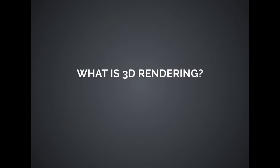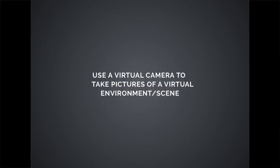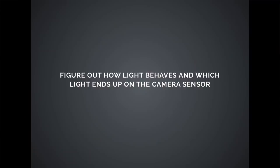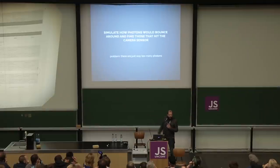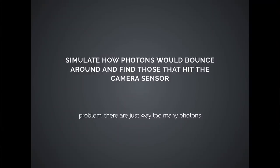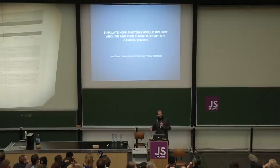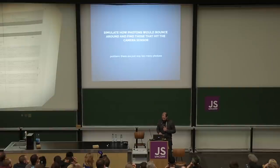So what is 3D rendering? The basic idea is that we use a virtual camera to take pictures of a virtual scene. We need to figure out how light would behave in our virtual world, and find out which parts of the light will end up in our camera sensor and form the pixels on screen. A naive solution would be to simulate how photons behave and how they bounce around in a scene, and figure out which of these photons hit the camera sensor. But as you may know, there are quite many photons to simulate — so that's not an option.